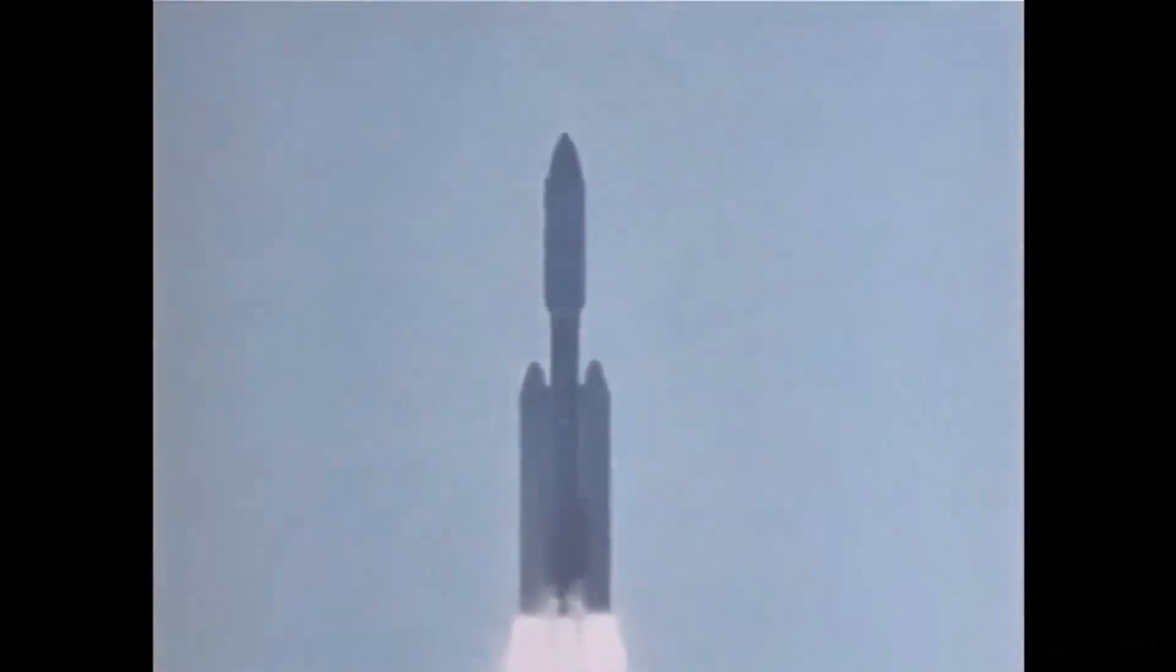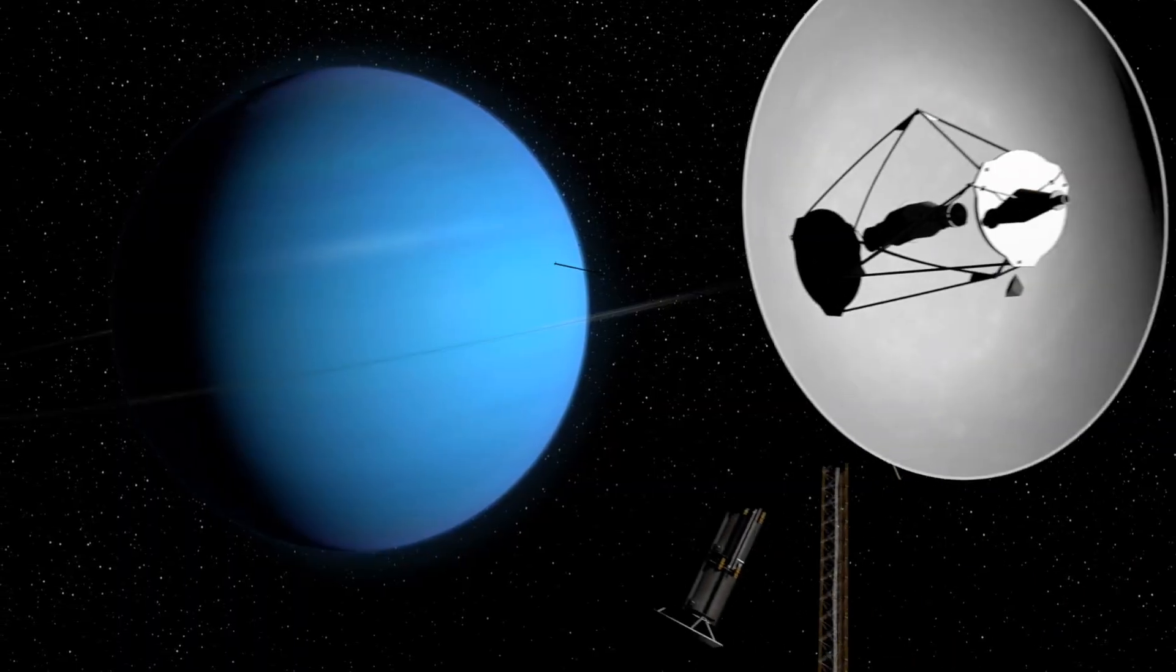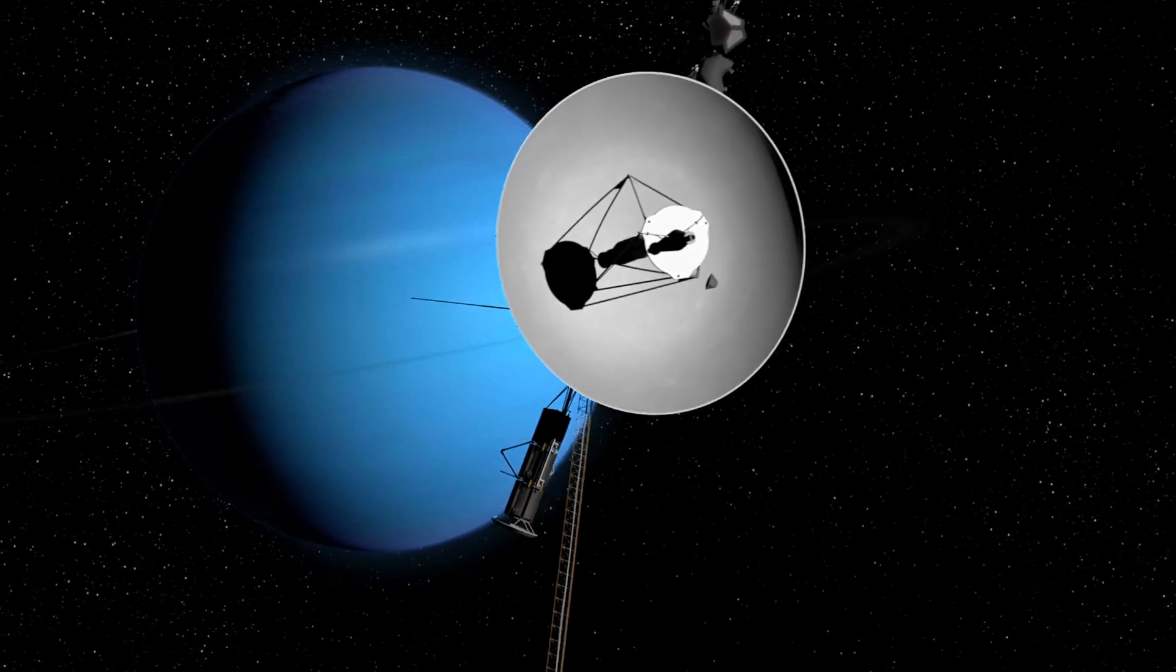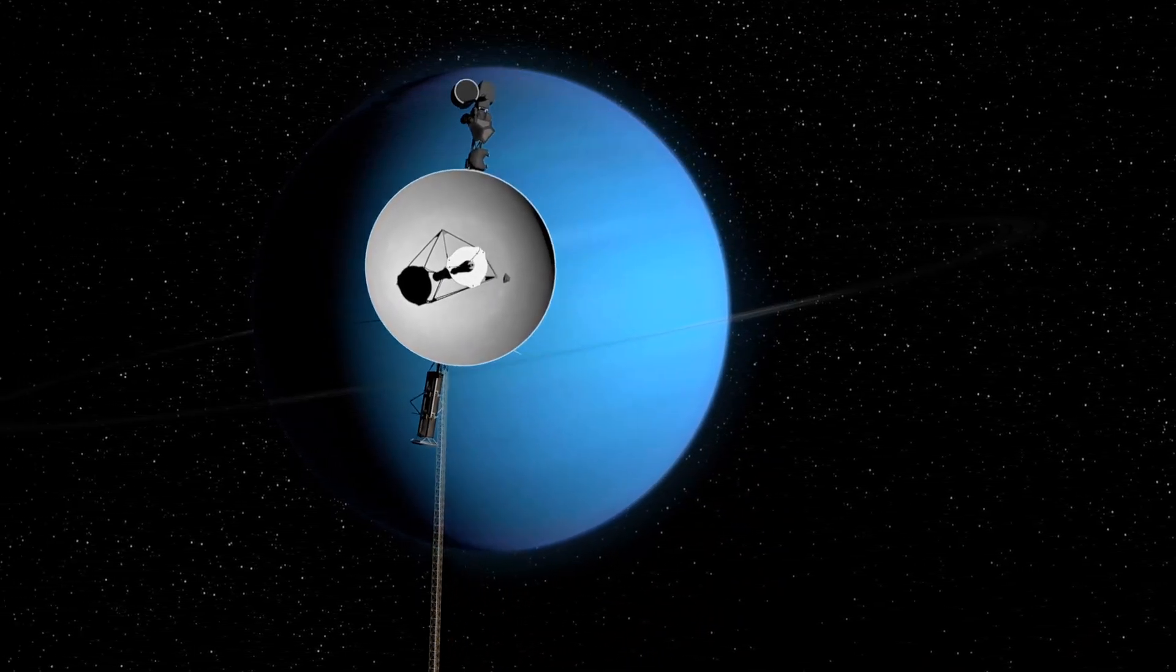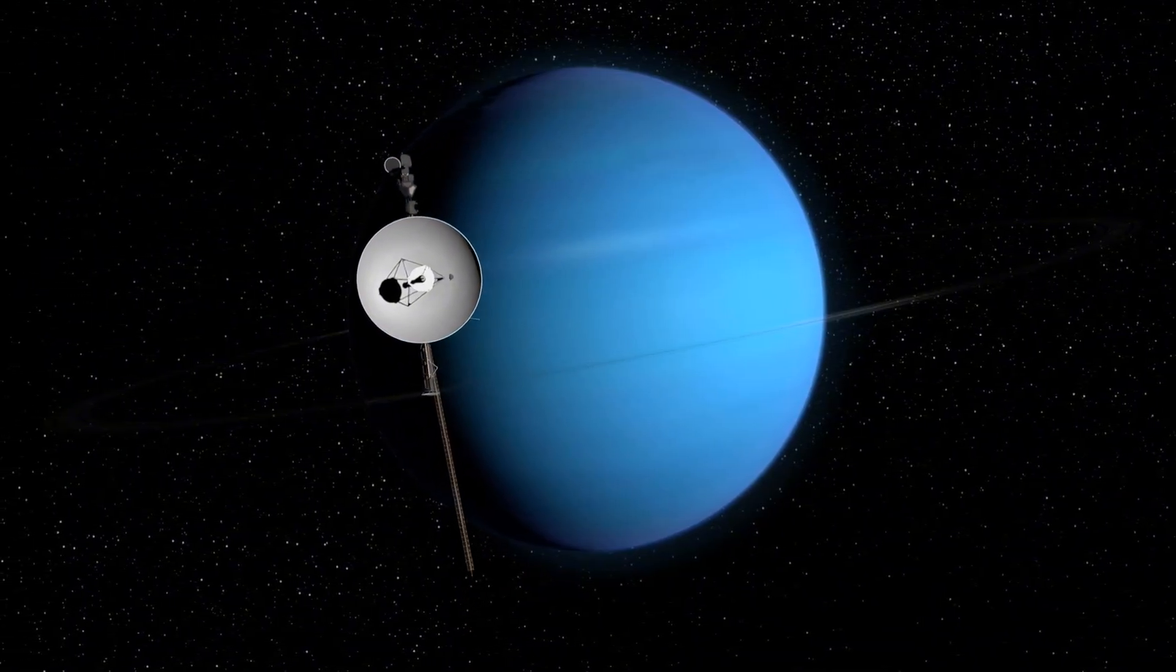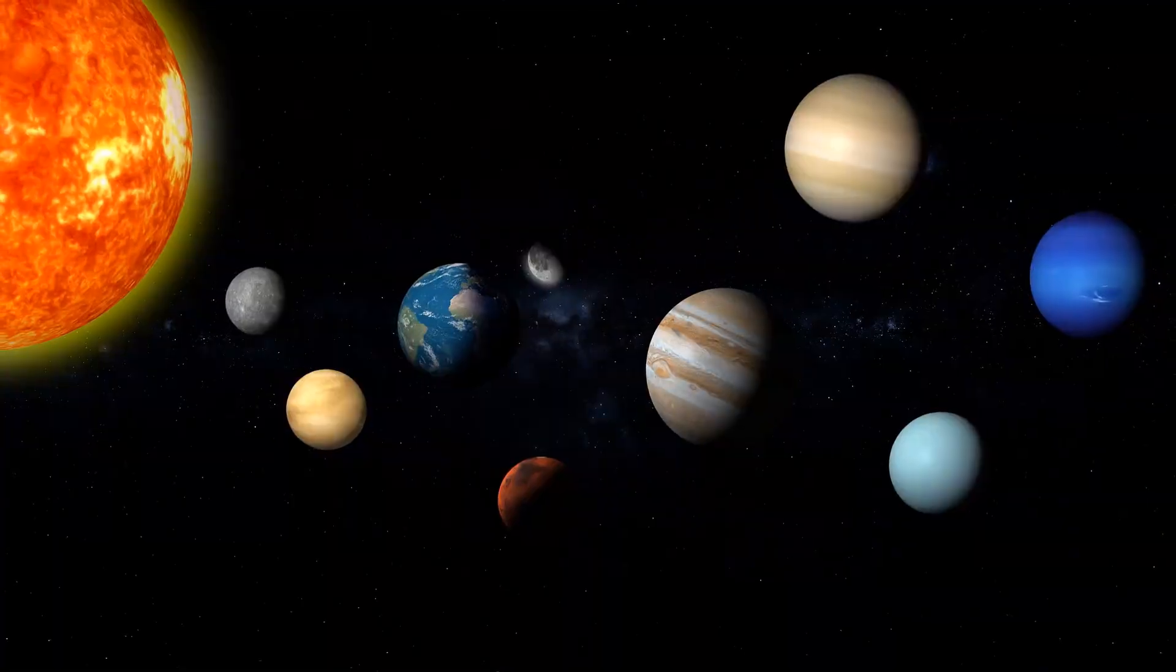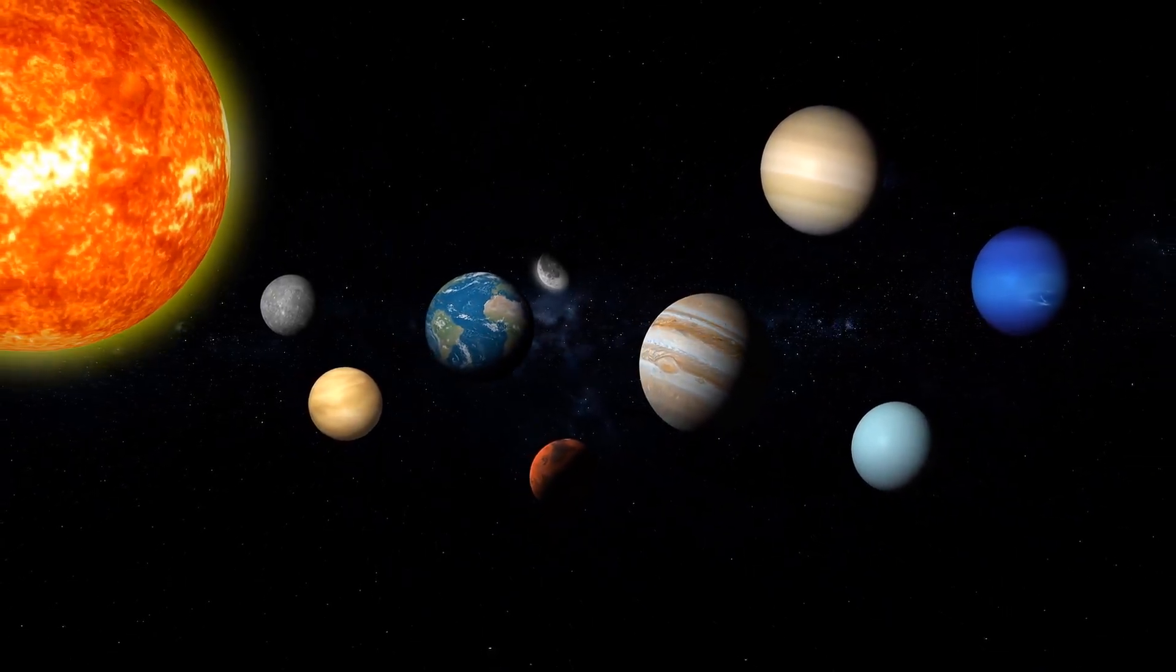Neptune, the distant ice giant. As we journey to the outermost reaches of our solar system, we encounter Neptune, the distant ice giant lying roughly 4.5 billion kilometers from Earth. Neptune marks the edge of our solar neighborhood, and sunlight racing across the vacuum of space takes about 4 hours and 15 minutes to reach Neptune from the Sun.